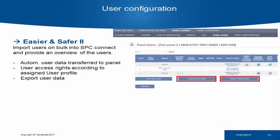The second is a bulk import. This allows for the importation of a large number of users through an Excel-compatible file into SPC Connect. When these users are imported, they are added onto the SPC panel and onto SPC Connect. Users' PINs can be emailed to the users through SPC Connect in order to ensure a smooth setup.